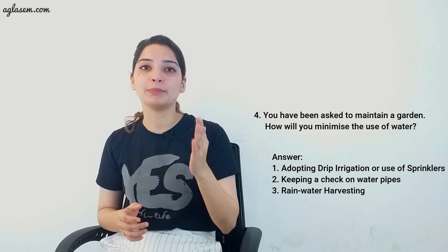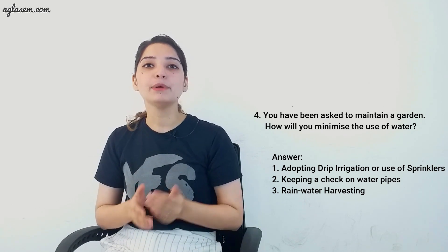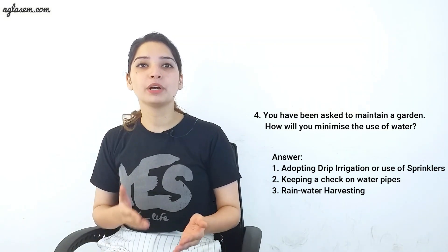Question 4: You have been asked to maintain a garden — how will you minimize the use of water? You can follow these steps while gardening: (a) adopt methods such as drip irrigation or sprinklers, where water reaches deep down the roots of the plants drop by drop, reducing excess wastage; (b) keep a check on the water pipe for any leakage; (c) collect rainwater in small pits which can later be used for gardening.